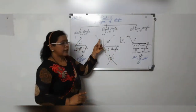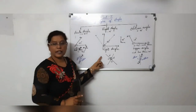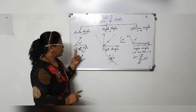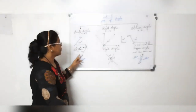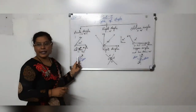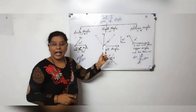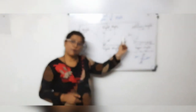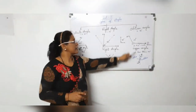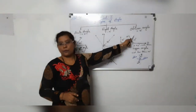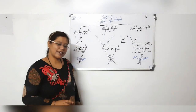So to summarize: right angle is always 90 degrees. Acute angle is a small angle which is smaller than 90 degrees. An angle which is more than 90 degrees and less than 180 degrees is an obtuse angle.